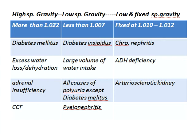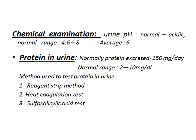Low specific gravity is less than 1.007. Causes: Number 1, diabetes insipidus; Number 2, large volume of water intake; and all causes of polyuria except diabetes mellitus and pyelonephritis. Low and fixed specific gravity is between 1.010 to 1.012. Causes include chronic nephritis, ADH deficiency, and arteriosclerotic nephropathy.